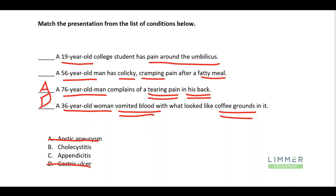Now we have cholecystitis — a gallbladder issue — or appendicitis. The 19-year-old college student with pain around the belly button: hopefully you recognize that appendicitis pain can actually start around the belly button. As the appendix gets inflamed, it starts knocking on the peritoneum and we can localize that pain. It migrates down to McBurney's point in the lower right quadrant. Young patient, pain around the umbilicus — appendicitis.